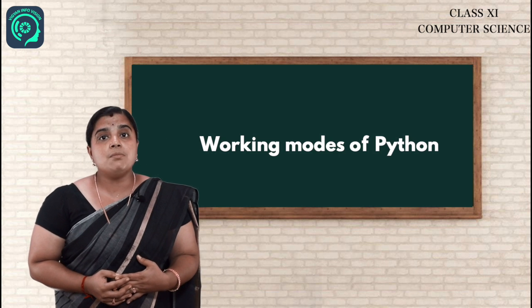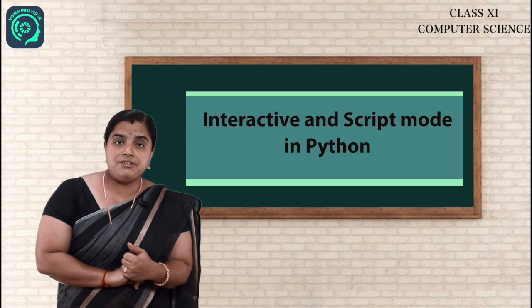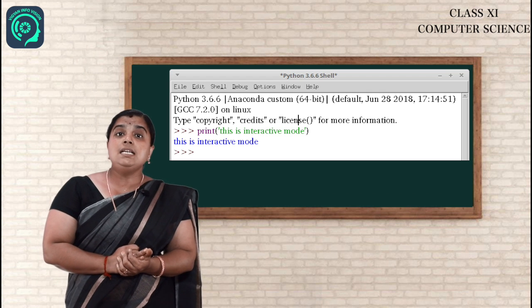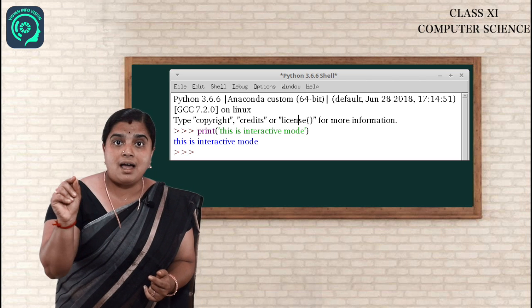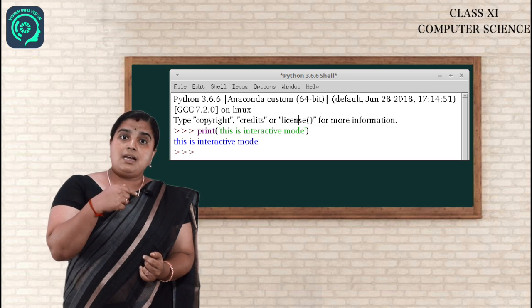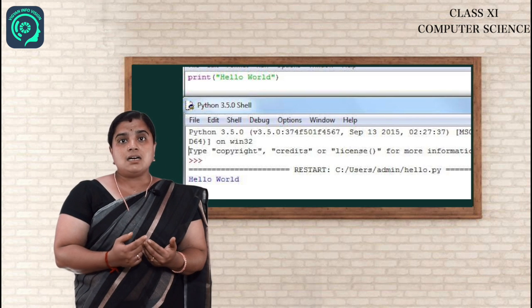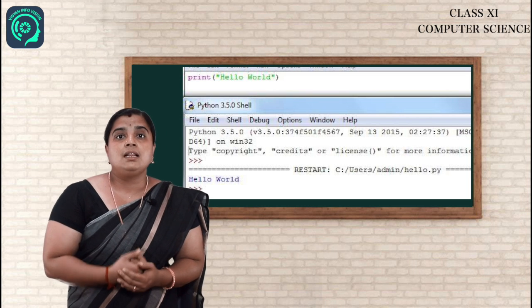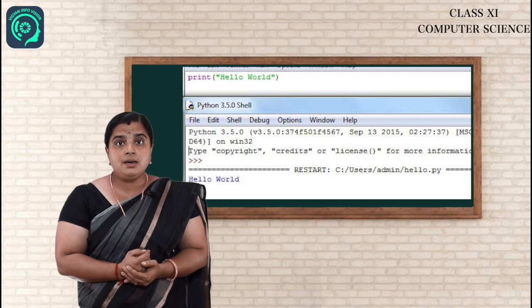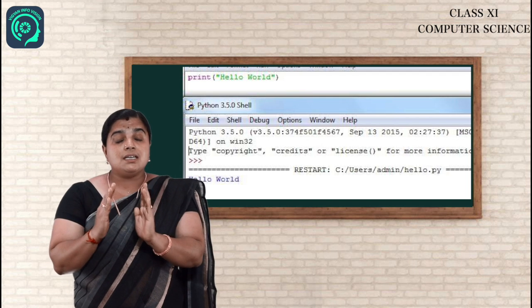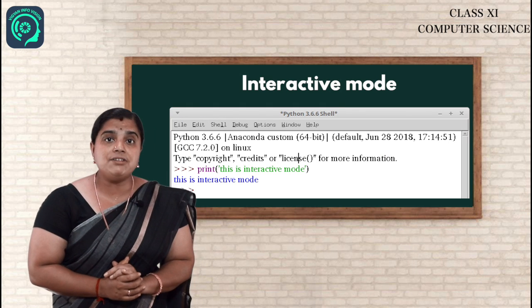Now we are going to discuss the working modes of Python. Python has two working modes: interactive mode and script mode. Interactive mode gives the output line by line — if you enter one line and press Enter, the interpreter immediately gives the output. Whereas in script mode, you can enter multiple lines at a time. The script itself is called a program or programming.